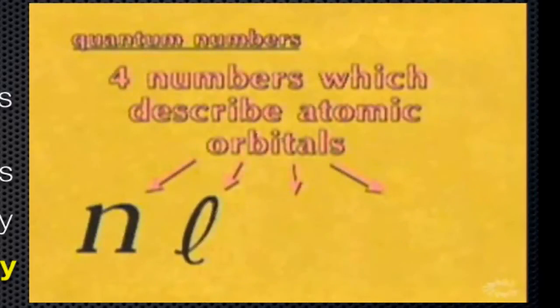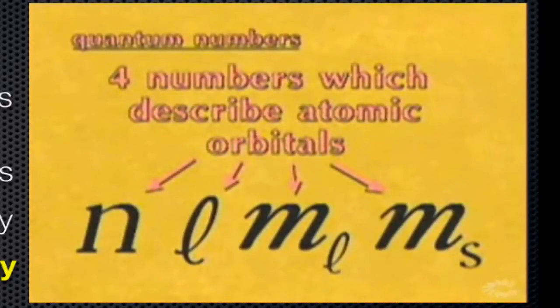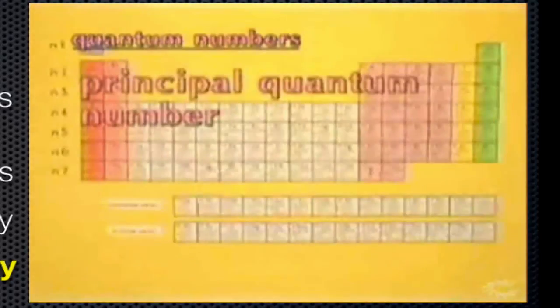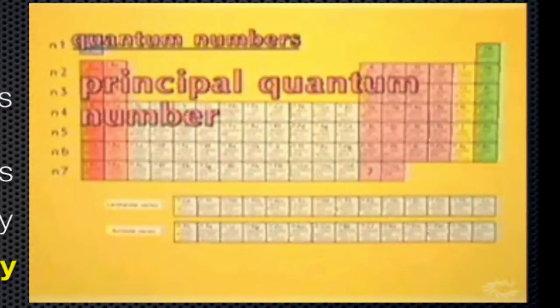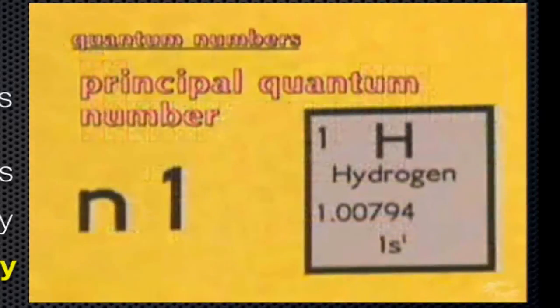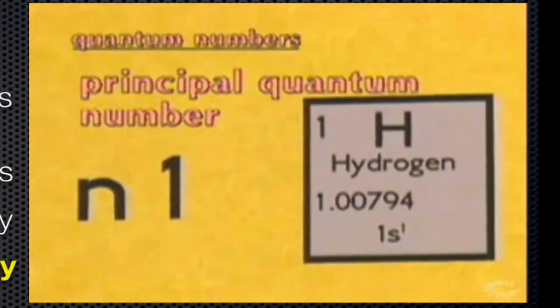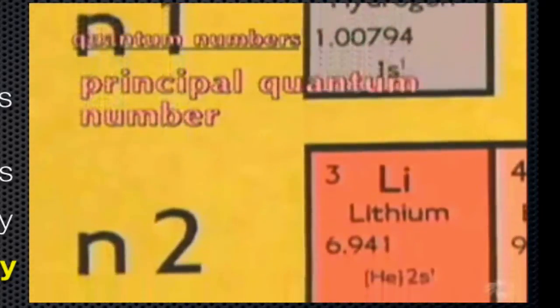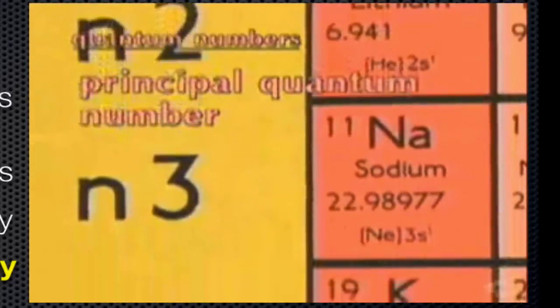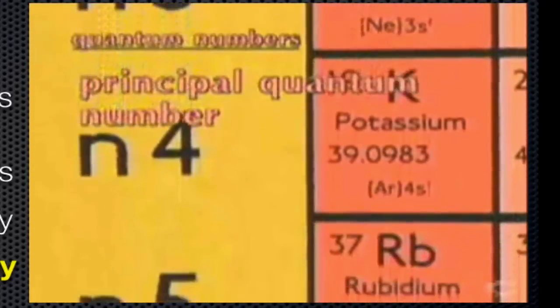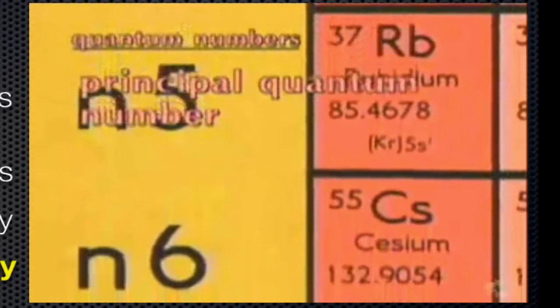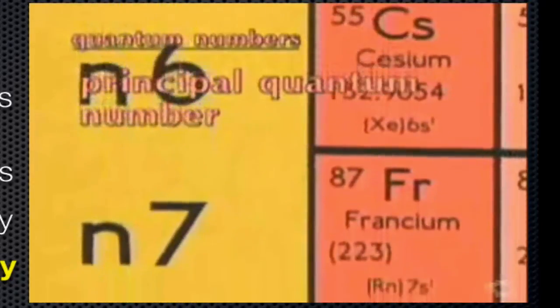Each atomic orbital may be described by a set of four quantum numbers. The principal quantum number is called n. As n increases in value, the atomic orbitals become larger in size and the electrons are found further away from the nucleus. As atomic numbers of elements increase, they have electrons in these larger orbitals and therefore the size of the atom increases.